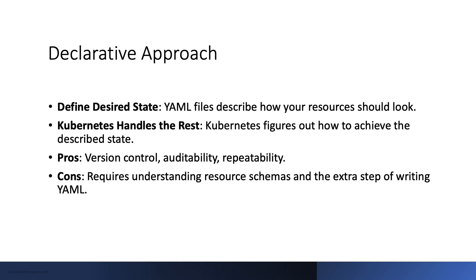On the other hand, the declarative approach involves working with object configuration files stored locally. Create, update, and delete operations are automatically detected per object by kubectl. This approach allows object configuration to be stored in a source control system such as Git and provides a template for creating new objects. However, a basic understanding of the object schema and an additional step in writing a YAML file is required.